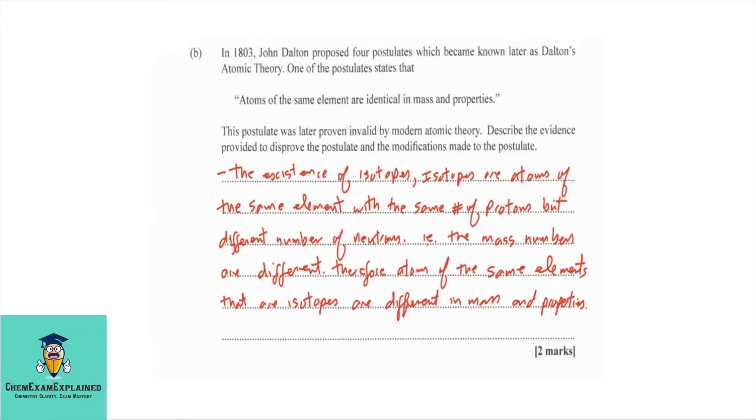This question is looking at the existence of isotopes. Isotopes are atoms of the same element with the same number of proton, but different number of neutrons. That is, the mass numbers are different. Therefore, atoms of the same element that are isotopes are different in mass and properties.